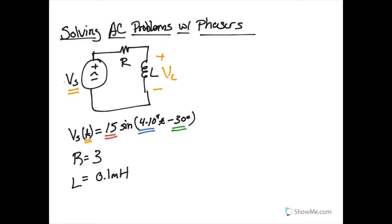So our amplitude here is going to be in terms of volts, our frequency in terms of radians per second, and our phase delay in terms of degrees. Now our other components, the resistor and inductor, are in the typical units that we are accustomed to with a 3 ohm resistor and a 0.1 millihenry inductor.